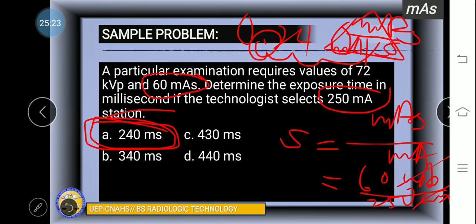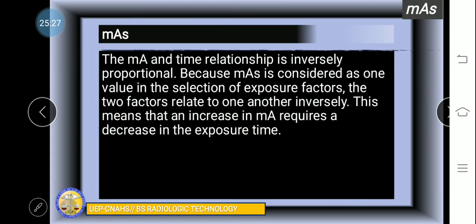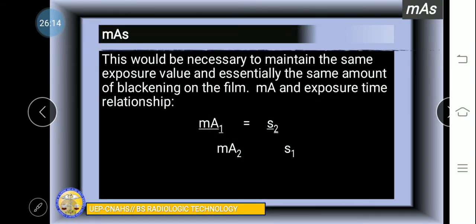The MA and time relationship is inversely proportional. Because mAs is considered as one value in selection of exposure factors, the two factors relate to one another inversely. This means that an increase in MA requires a decrease in exposure time, especially when our concern is the quality of the image. This is what we call the reciprocity law.